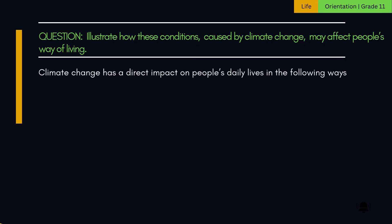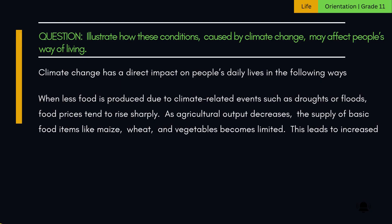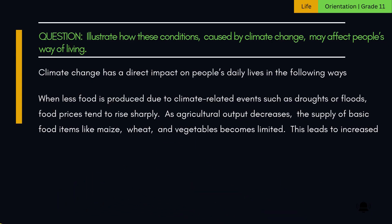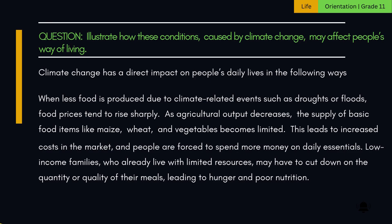Climate change has a direct impact on people's daily lives in the following ways. When less food is produced due to climate-related events such as droughts or floods, food prices tend to rise sharply. As agricultural output decreases, the supply of basic food items like maize, wheat, and vegetables becomes limited. This leads to increased costs in the market, and people are forced to spend more money on daily essentials. Low-income families, who already live with limited resources, may have to cut down on the quantity or quality of their meals, leading to hunger and poor nutrition.